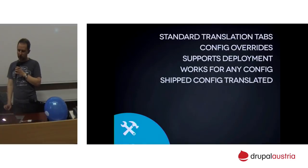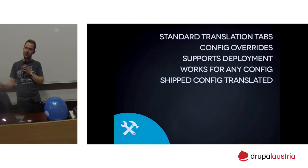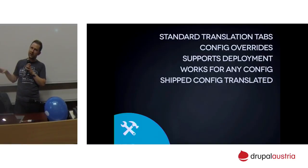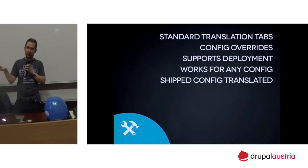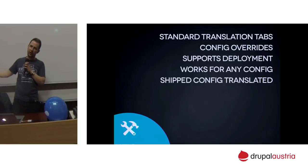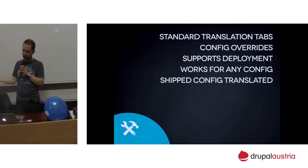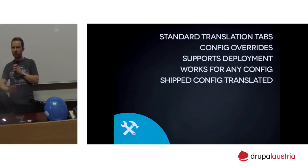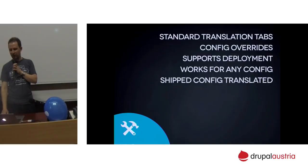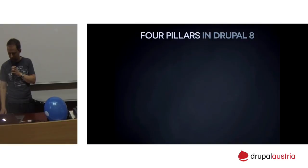In summary for configuration translation: standard translation tabs as a UI, configuration translations stored as config overrides so it works with your deployment system, works for everything in configuration including contrib, and all shipped configuration is hopefully already translated on localized.drupal.org by your translation team so you don't need to reinvent the wheel. No need for all those i18n variable, web form, views modules — this just works.